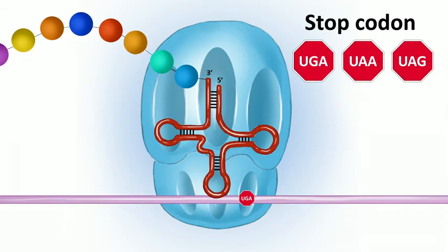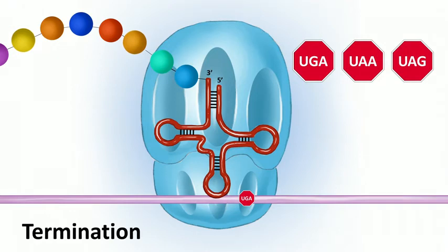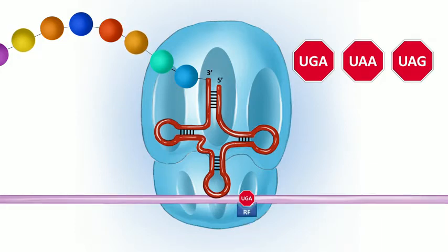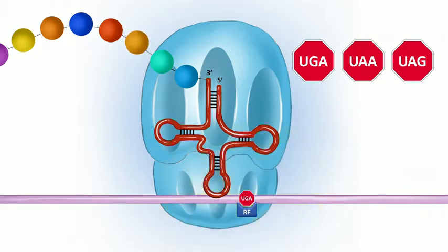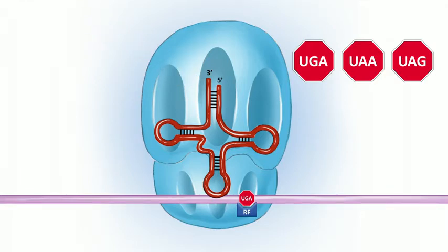When the codon at the A site is a stop codon — the three RNA stop codons are UGA, UAA, and UAG — that signals the ribosome to terminate. Those stop codons don't match any tRNA, so instead a release factor binds to the mRNA and hydrolyzes GTP. The new polypeptide is released from the tRNA at the P site, and the ribosome subunits and tRNA all separate and can be reused.